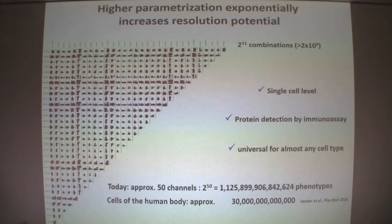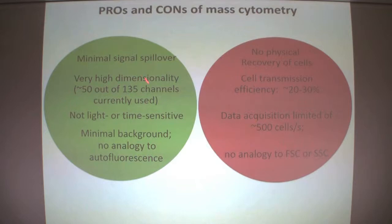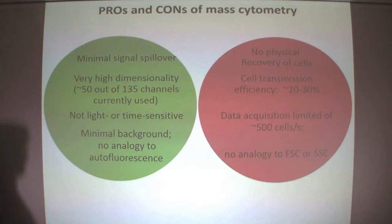This is still a single cell technology, so we can get lots of data from single cells. It's a protein detection method — while there are some probes for detecting RNA or transcripts, the majority of projects deals with protein detection. It's suitable for almost any cell type that is not too large. The advantages include minimal and controllable signal spillover, very high dimensionality, and minimal background because the reporter metals — the lanthanides — are almost absent from biological material like cells.